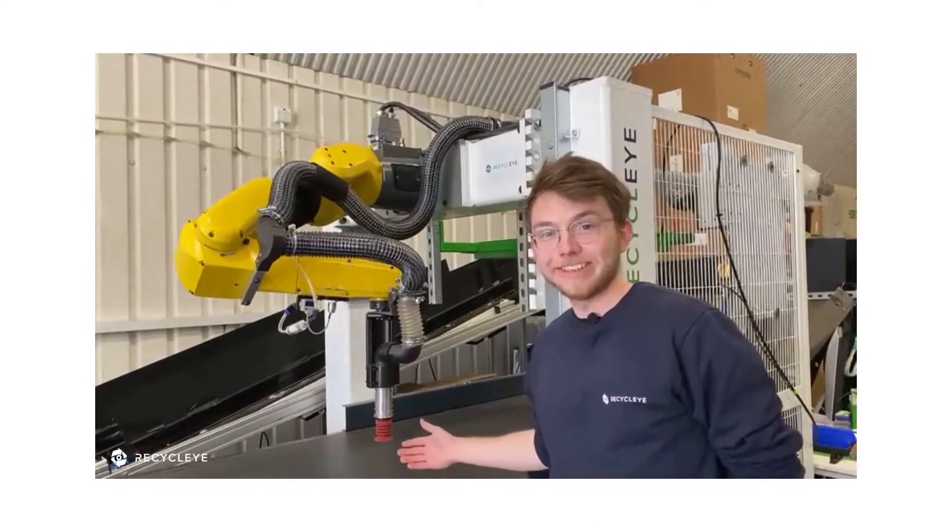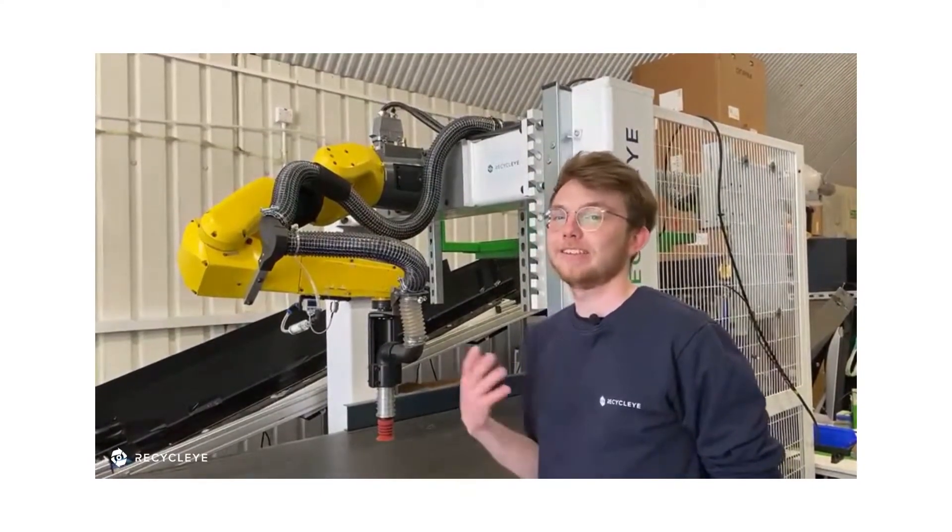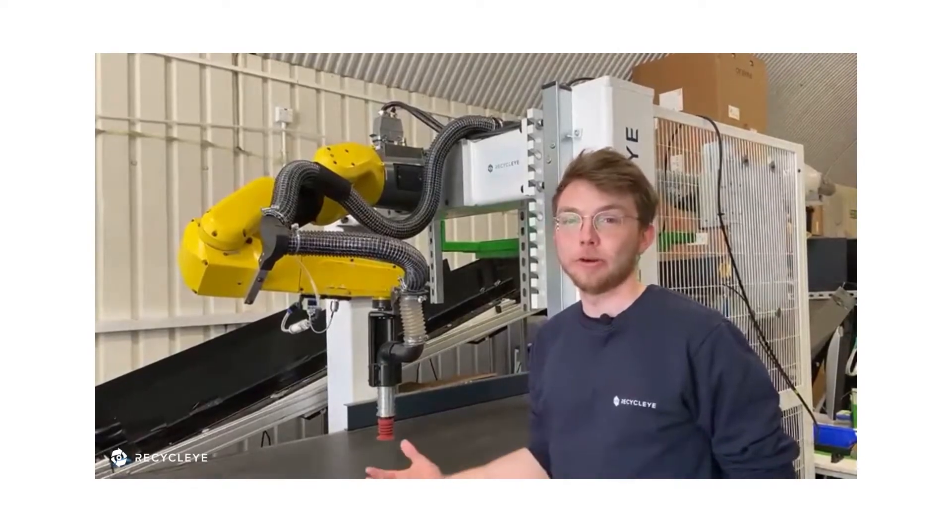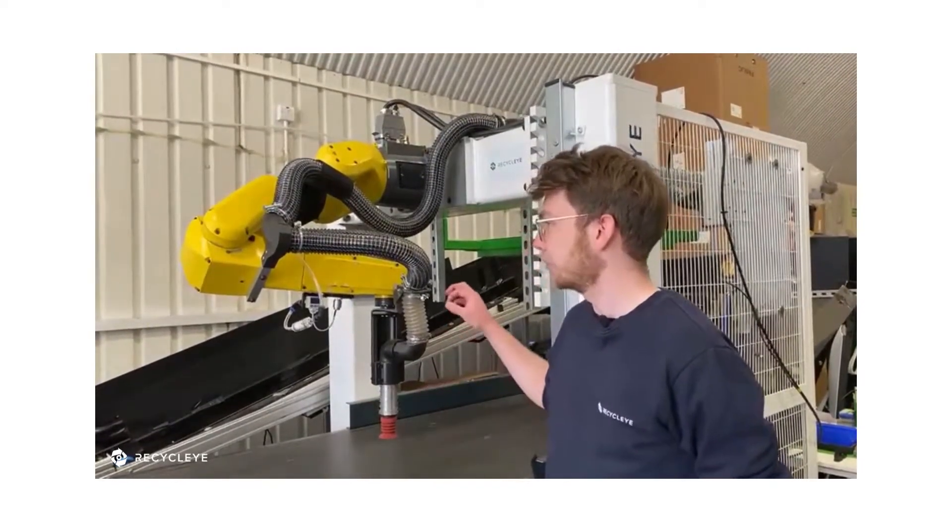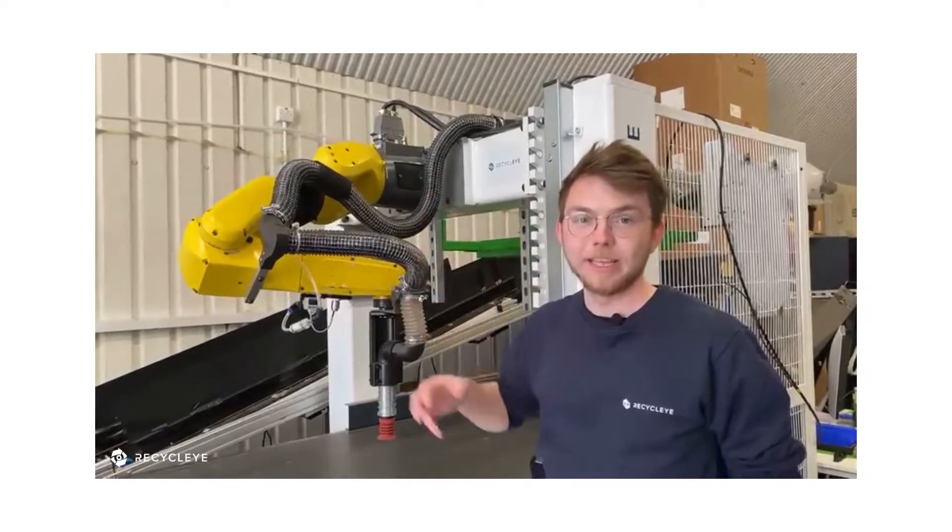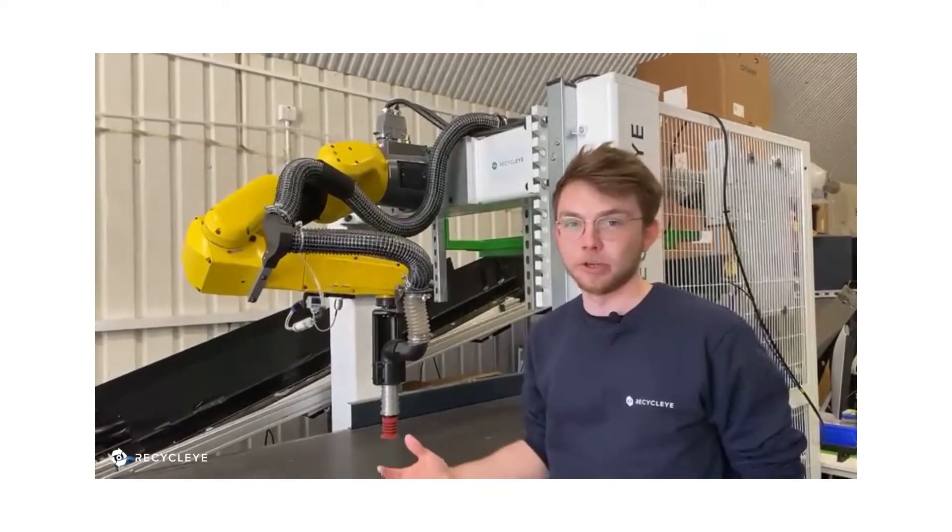Our gripper is a silicone one that is easily moldable to any item shape whether that's an aluminium can or a crumpled milk bottle and because it's the smallest diameter section of our pneumatic system anything that gets sucked up will go all the way through to our filter avoiding blockages.